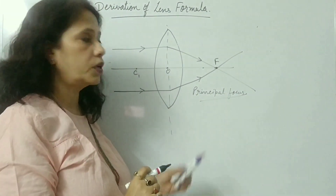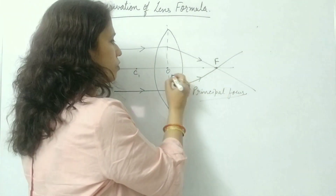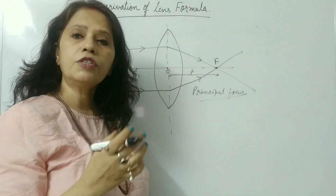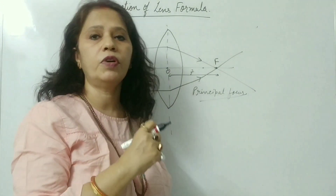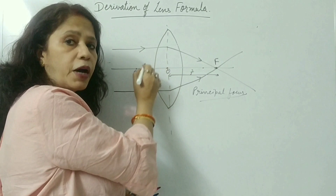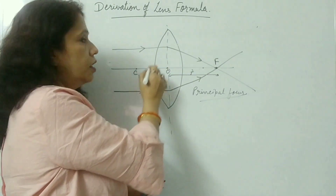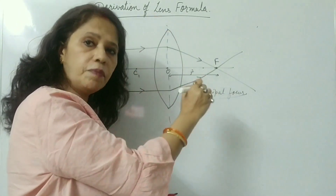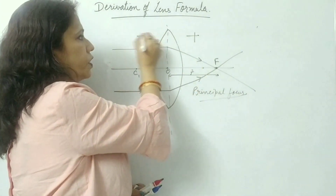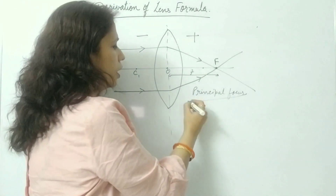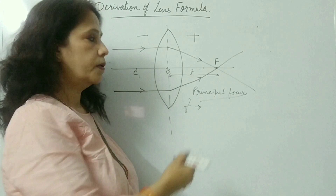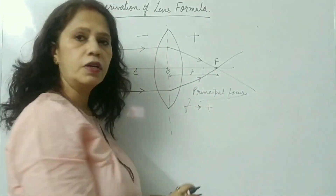Regarding sign convention: the distance OF is the focal length. If all measurements are taken in the direction of the incident ray, that is taken as positive; in the opposite direction, it is negative. For a convex lens, F is on the positive side, so the focal length will be positive.